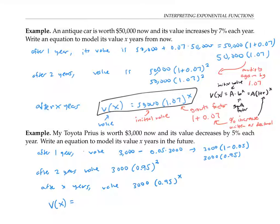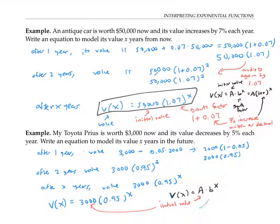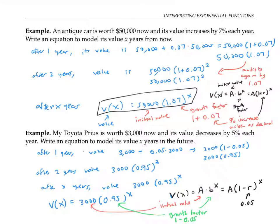After x years, the value will be 3,000 times 0.95 to the x. This is again an equation of the form V of x equals a times b to the x, where a is 3,000 — the initial value — and b is 0.95, the growth factor, even though we're actually declining in value. The 0.95 came from taking 1 and subtracting 0.05 because of the 5% decrease. So we can write this as a times (1 − r) to the x, where r is 0.05, the percent decrease written as a decimal.